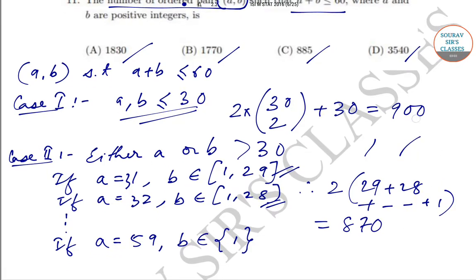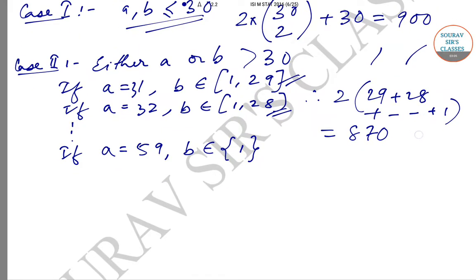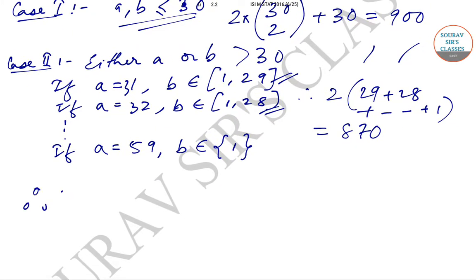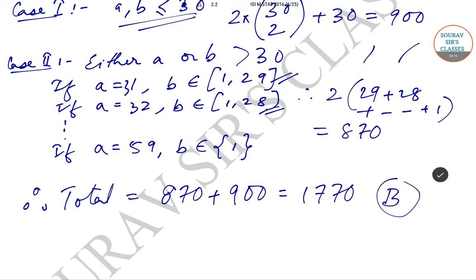So if we add up case 1 and case 2, the total number of combinations will be 870 plus 900, and that is equal to 1770, which is option B. So let's move on to the next question.